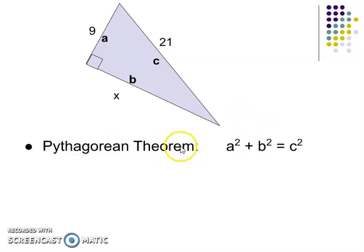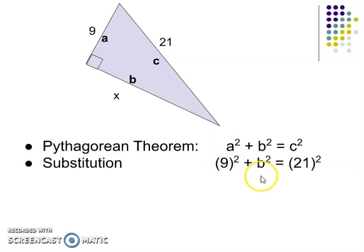And then I'll use my Pythagorean theorem. So substituting in, the 9 will go for the A. I'm going to leave this as a b². I could have left it as an x. Could have changed it as an x if I chose. And then 21 for my C².